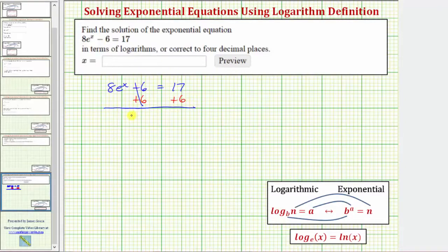Simplifying, we now have 8e^x = 23. Next we'll divide both sides by eight. Simplifying again, we now have e^x = 23/8.